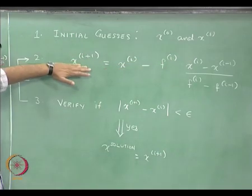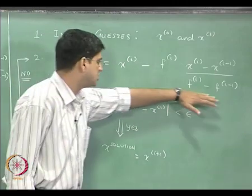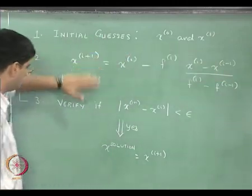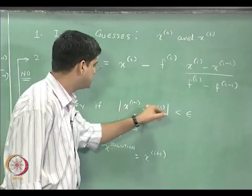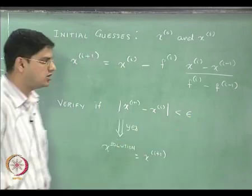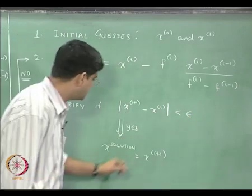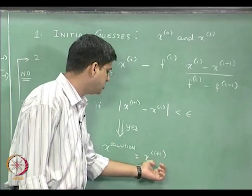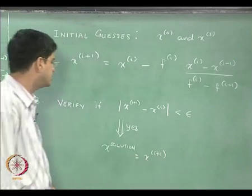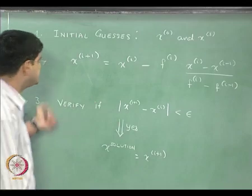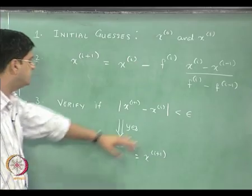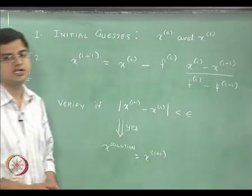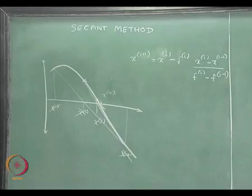We find our x_i+1. We then check whether the absolute value of x_i+1 minus x_i is close enough — that convergence condition is equal to x_i+1. If it is not, we increment i and we repeat this process until this particular condition is met. This is going to be the algorithm for the secant method.